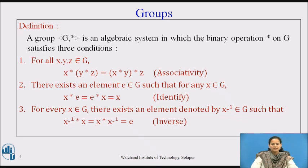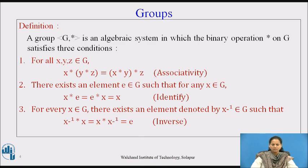Number 2: there exists an element e belonging to G such that for any x belonging to G, x star e is equal to e star x is equal to x, which is termed as the identity of G. Number 3: for every x belonging to G, there exists an element denoted by x inverse which also belongs to G, such that x inverse star x is equal to x star x inverse is equal to e, and which is known as the inverse element of x in G.